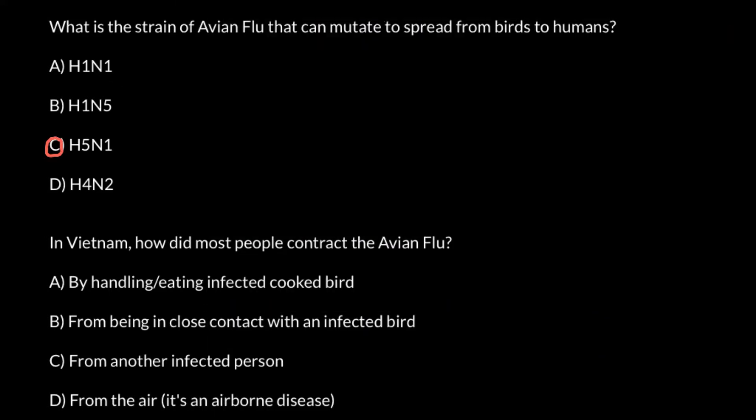Now we can move to the second question: in Vietnam, how did most people contract the avian flu? Answer A: by handling or eating infected cooked birds. This is partly true, but only partly.